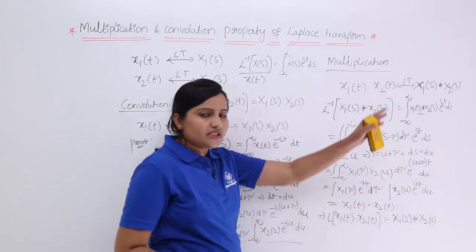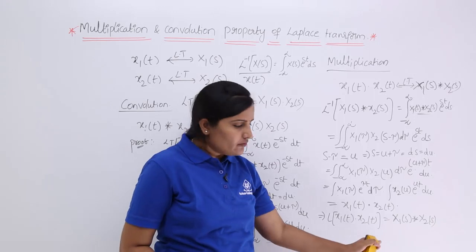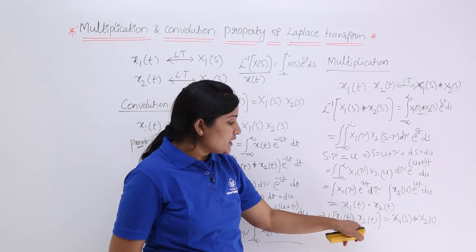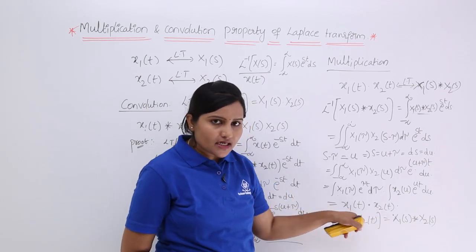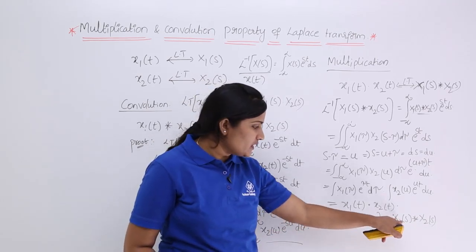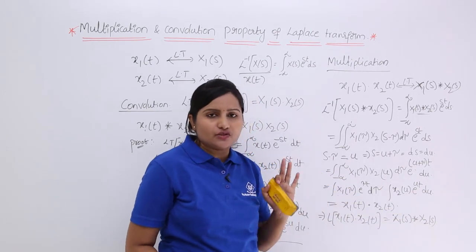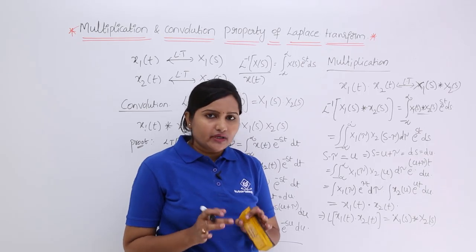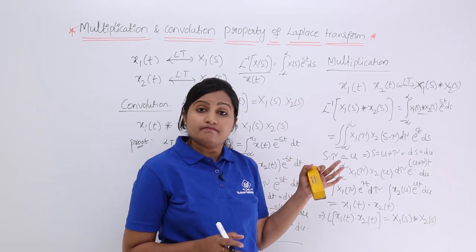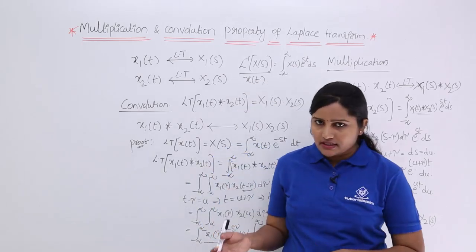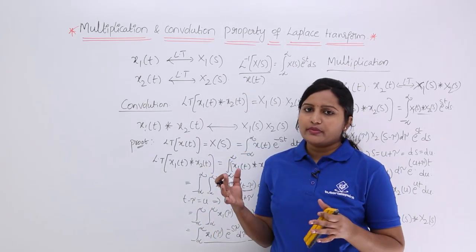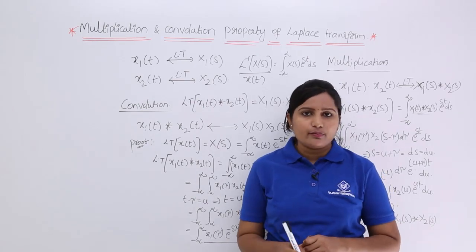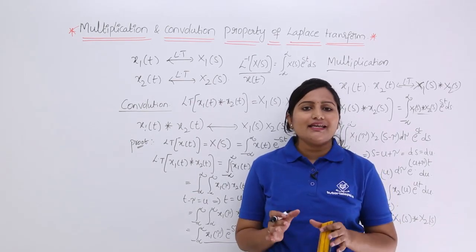If you consider the constant 1 by 2πj, that will follow through in the derivation and you will get 1 by 2πj in the final result. So the Laplace transform of x1 of t times x2 of t is equivalent to x1 of s convolved with x2 of s. Using these properties you can solve many problems. We will see many problems related to multiplication and convolution properties in future videos. These properties are very important when you are solving gate exam problems.